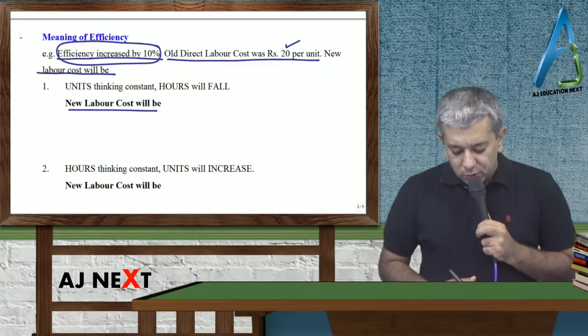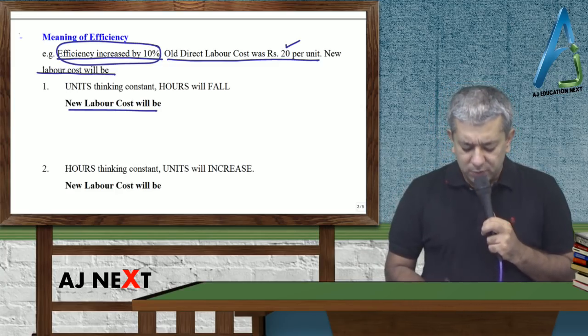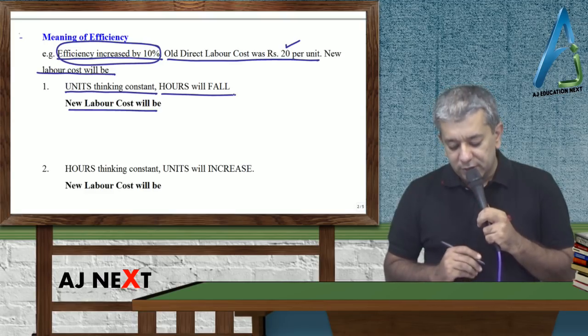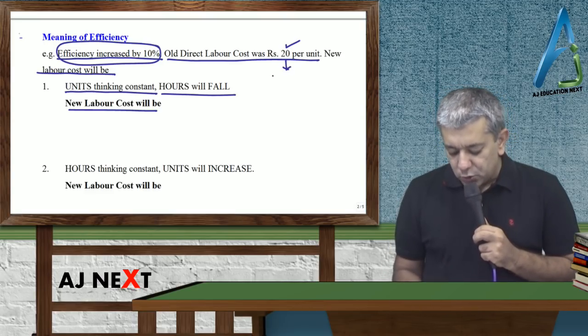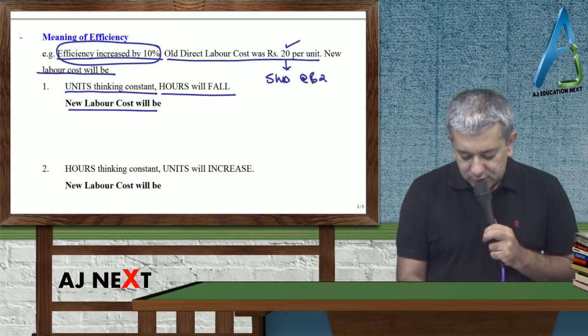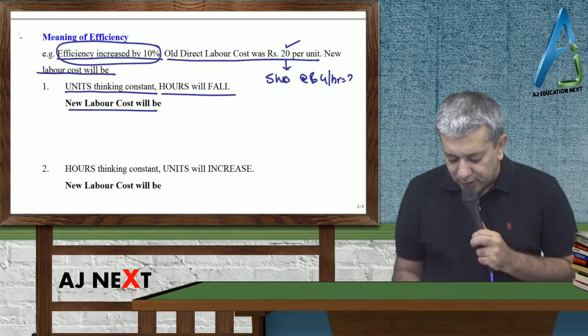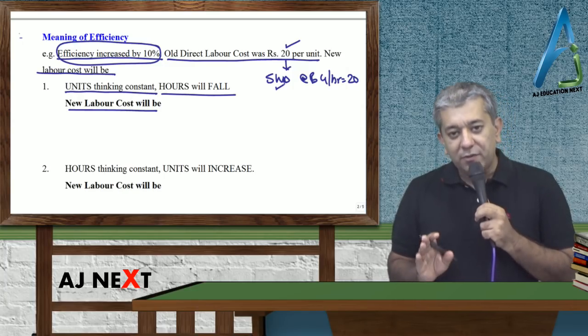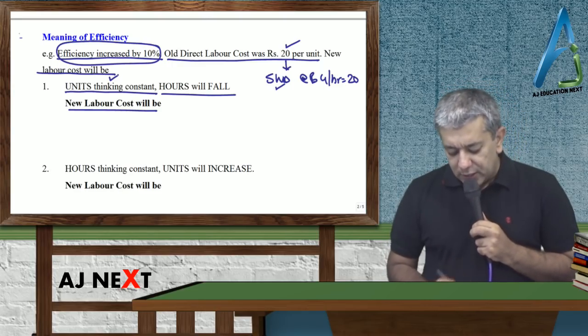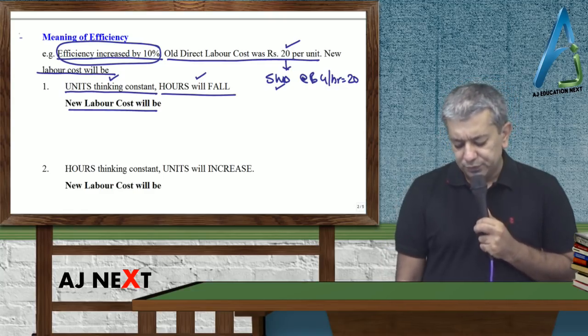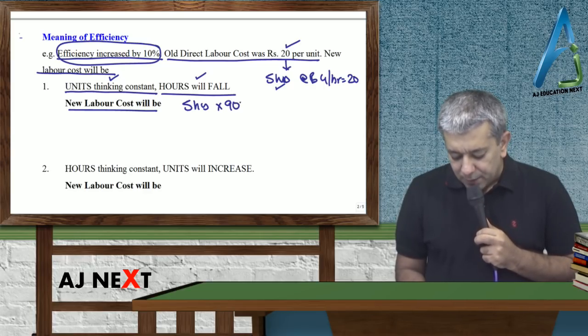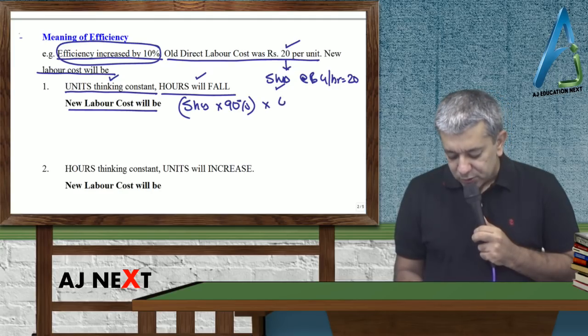There are two ways for you all to be thinking. First. Efficiency bada gaya. Uska matlab kya hoata hai? Units thinking constant, hours will fall. Example: ye joh 20 tha, suppose it was 5 hours at the rate of rupees 4 per hour. Efficiency ka first matlab ki units thinking constant, hours will fall. If hours will fall, toh pahle her unit banane ke liye 5 hours lagta tha. Abhi 10% kam time lag jayega.